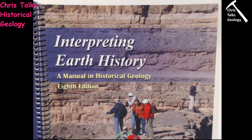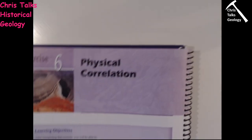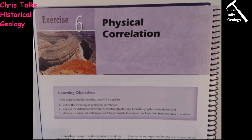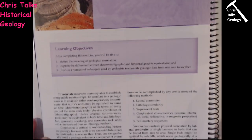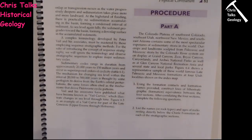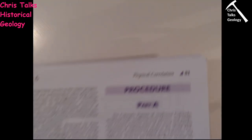Hello everybody, this is Dr. Christopher White and in this video we're going to be doing Exercise 6 from Interpreting Earth History by Ritter and Peterson. Exercise 6 begins on page 78. In this exercise we're going to be doing physical correlations — linking up adjacent layers of rock and trying to work out what's been happening to them. There's an objective box in purple and a description of physical correlation on pages 78, 79, and 80. Please take some time to read the text — it's going to make your life easier.